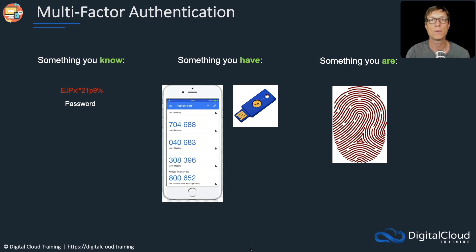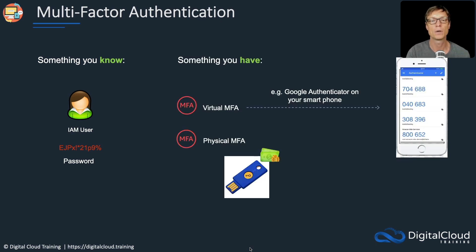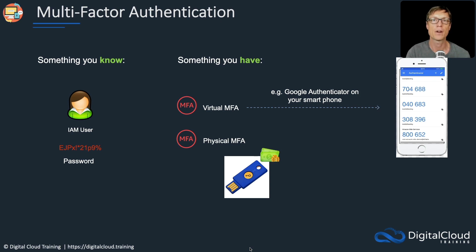That's why we have multiple factors of authentication. In AWS, we use something you know — your IAM user account and a password — and something you have. That's either a virtual MFA device such as Google Authenticator on your mobile phone, or a physical MFA device, which is an actual physical token. Physical tokens do cost money, whereas Google Authenticator is completely free.